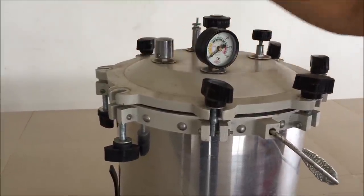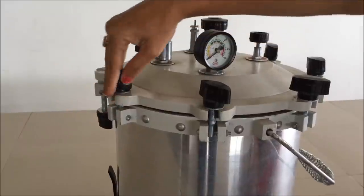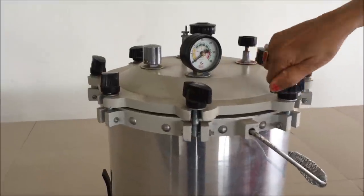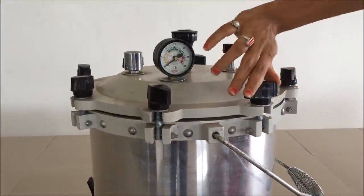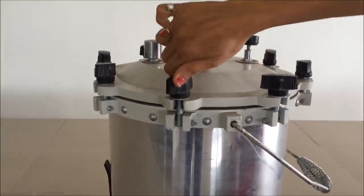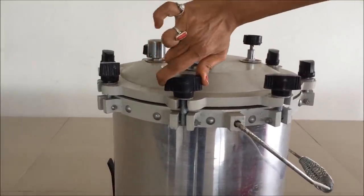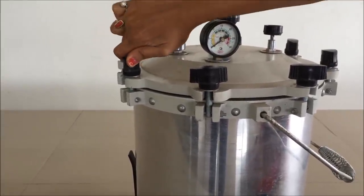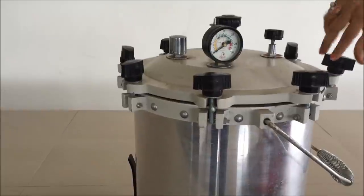Once we have placed the lid, place all screws on their respective places first. Do not start tightening. After placing it, start to rotate the screw clockwise. This will tighten the autoclave and fix so that the vapor from inside will not be able to come outside through this gap.